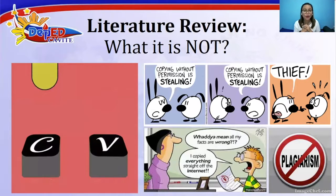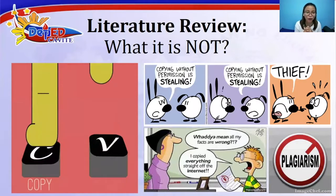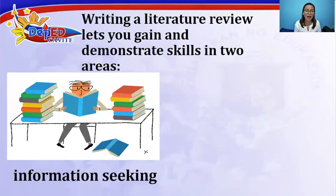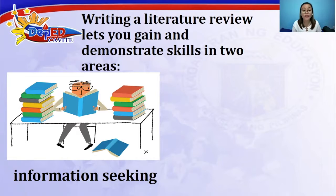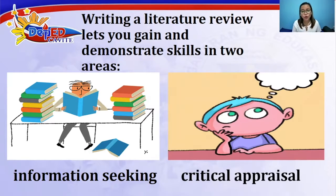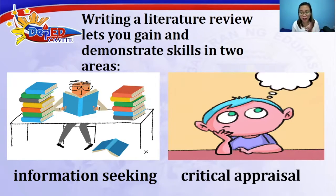Literature review is not just a copy-and-paste method of generating information — that would be plagiarism. Writing a literature review lets you gain and demonstrate skills in two areas: first, information-seeking, or the ability to scan the literature efficiently using manual or computerized methods to identify a set of useful articles and books. The second skill is critical appraisal — the ability to apply principles of analysis to identify unbiased and valid studies.